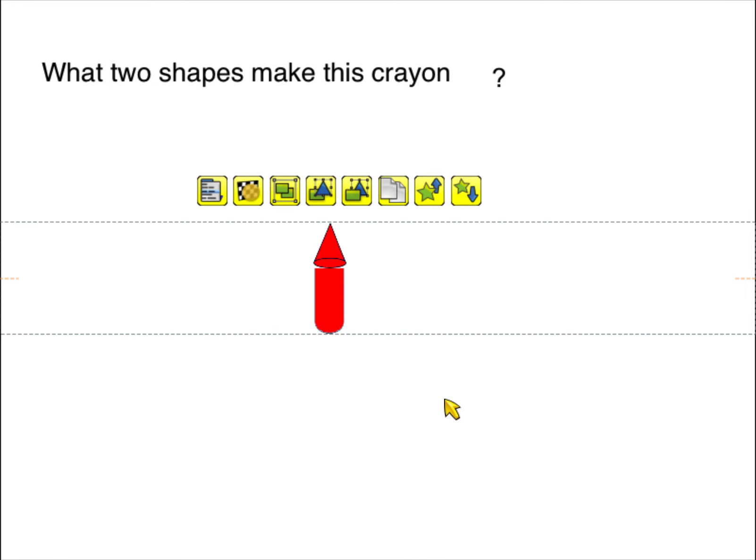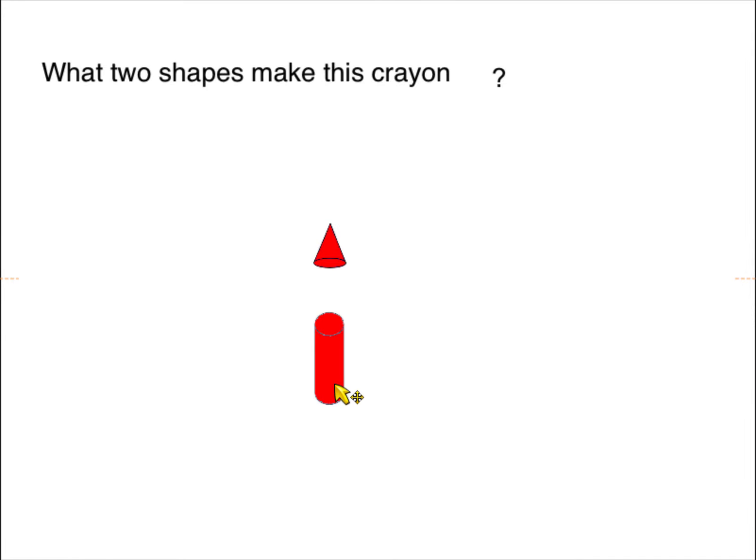So if I made a crayon, what two shapes would I need? I would have a cylinder and on top there would be a cone.